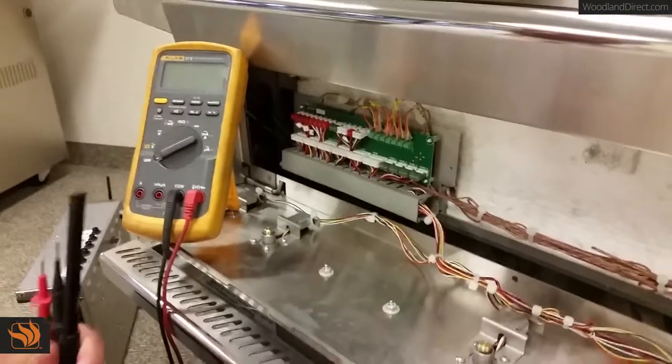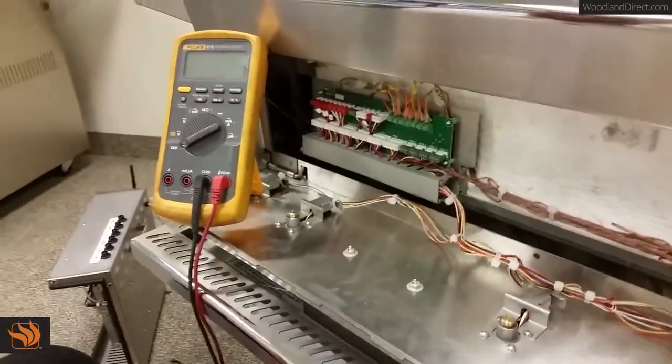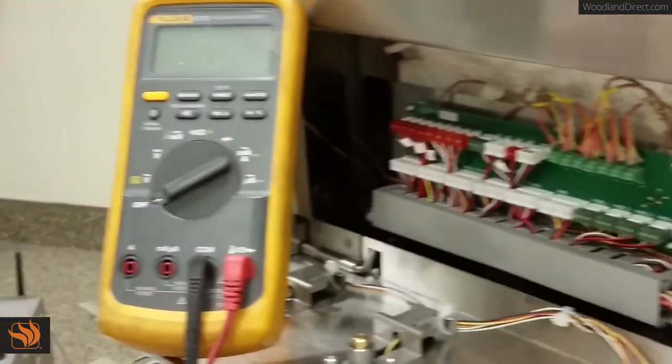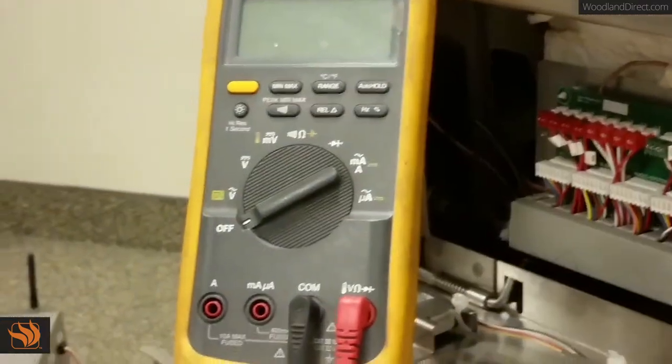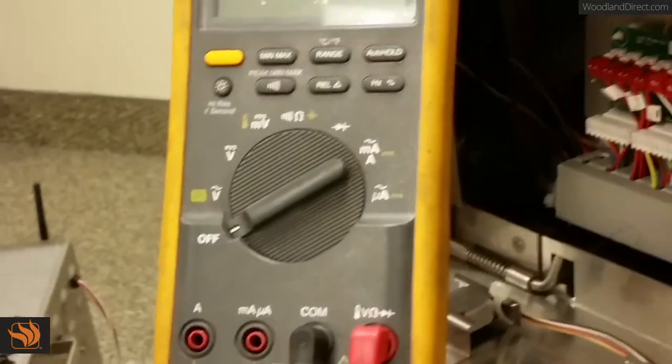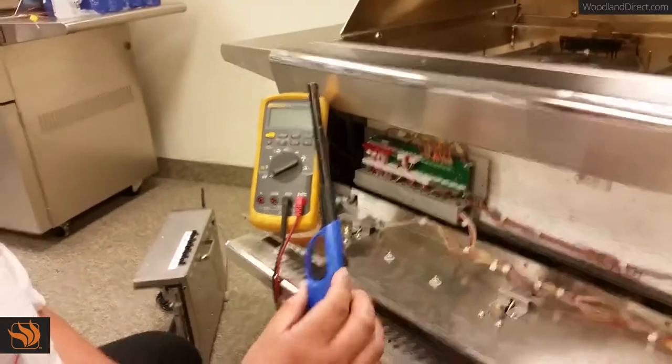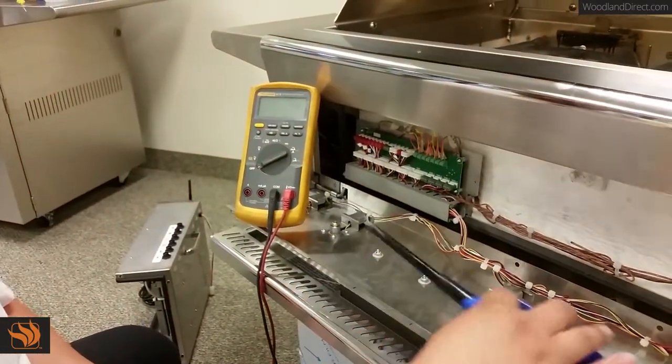So how do you use a multimeter to test the proper wiring function of a TC? Well first you get a handy multimeter. What you want to do is, with the help of somebody else, you need a source of heat.